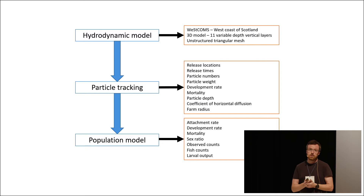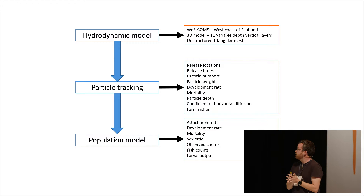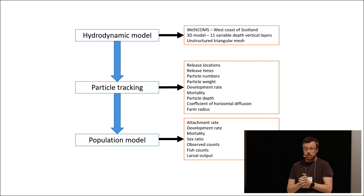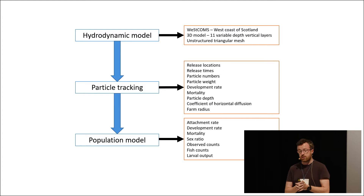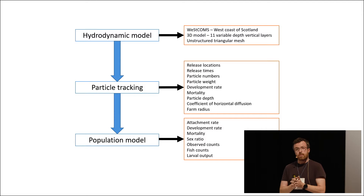With the hydrodynamic model, we can then use a particle tracking tool where we can change release locations, release times, particle numbers, particle weights — which are typically set as 1 and then decay, describing the mortality — development rates, the depth of release, coefficient of horizontal diffusion, and we can also define the radii around these farm sites.